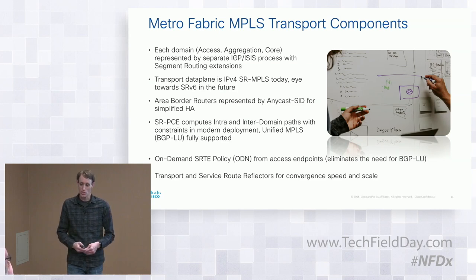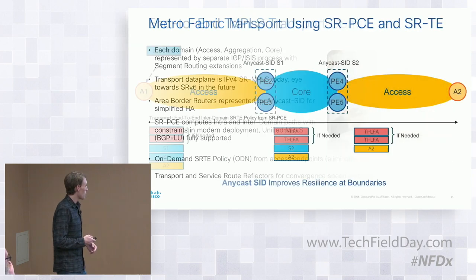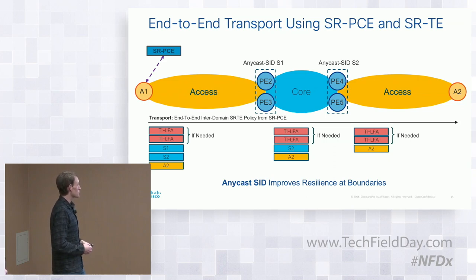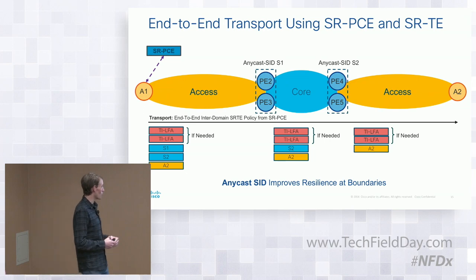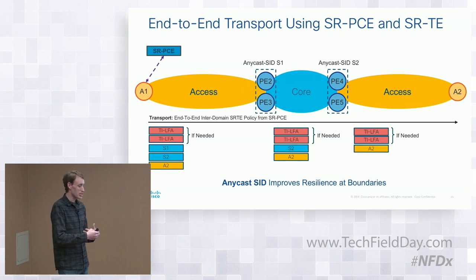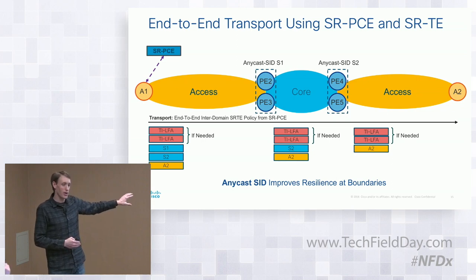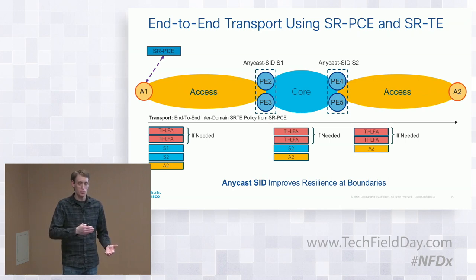Here's a data plane diagram of the end-to-end transport in a three-domain setup — really just access-core-access. You can see A1 is speaking to the SRPCE. Only that A1 node has the state of that path. The other nodes across the network are learning adjacent SID information through the IGP, but if it's a programmable path, the state of that entire path is only on that node — unlike RSVP-TE where every node participates in that full path.